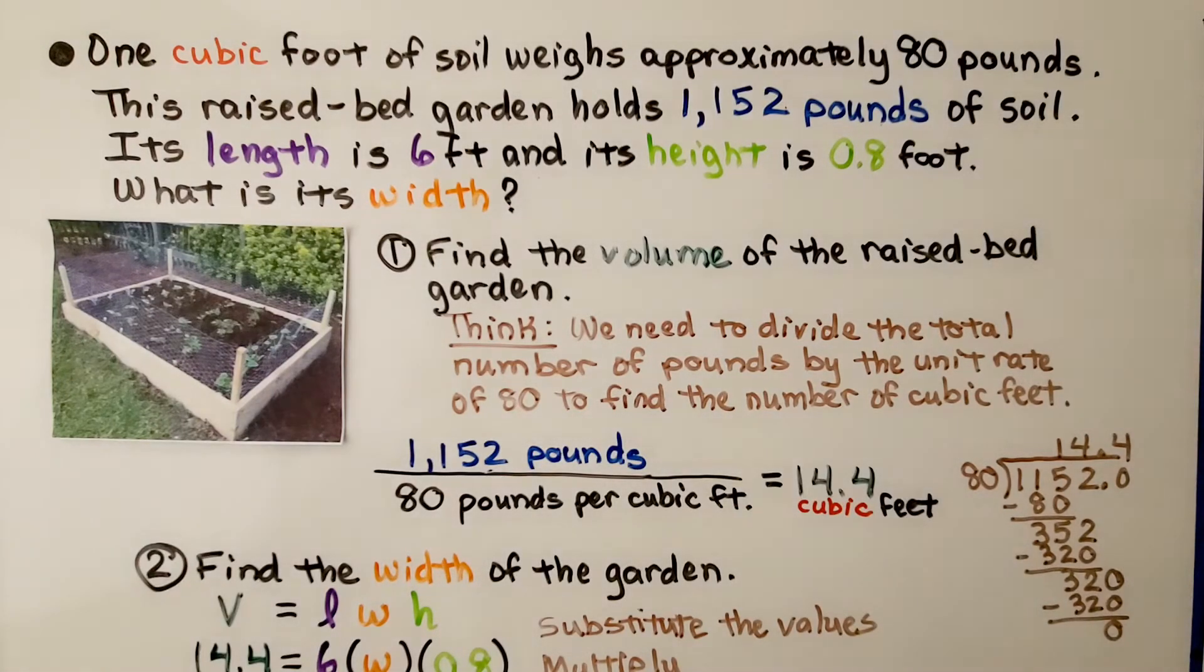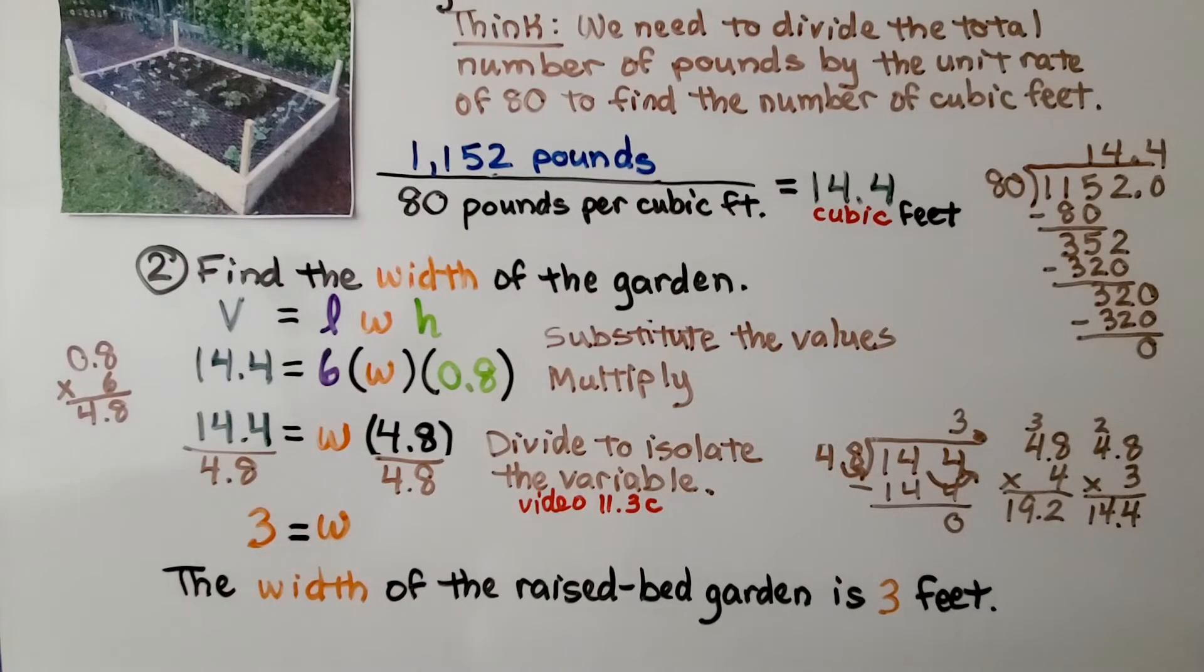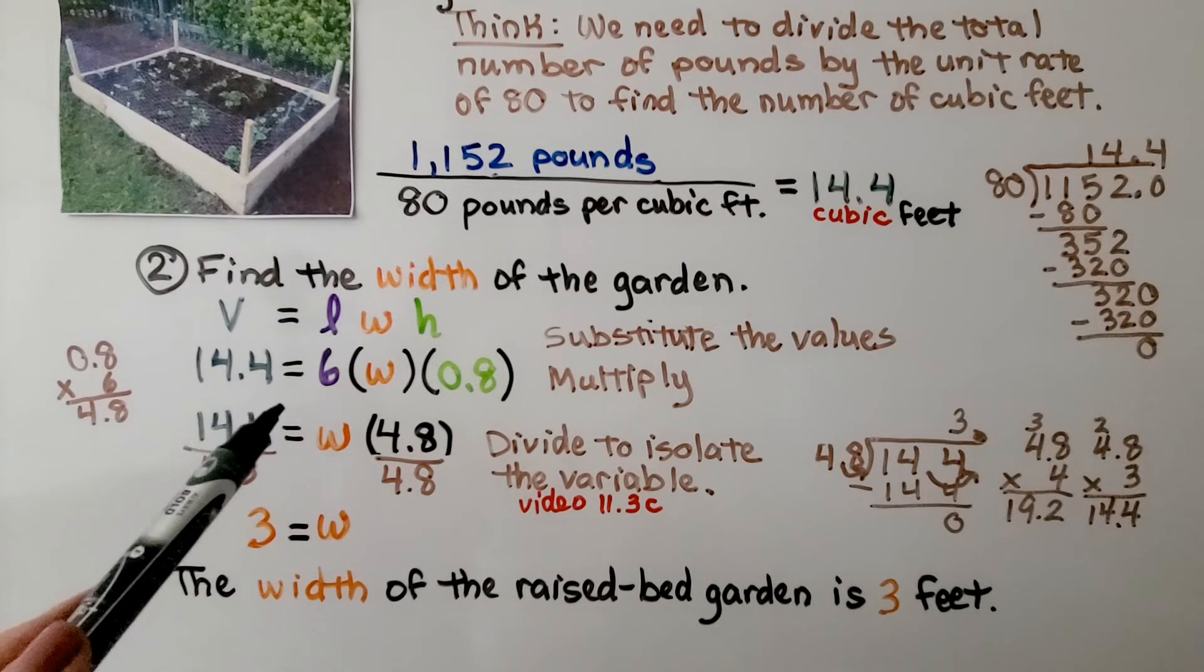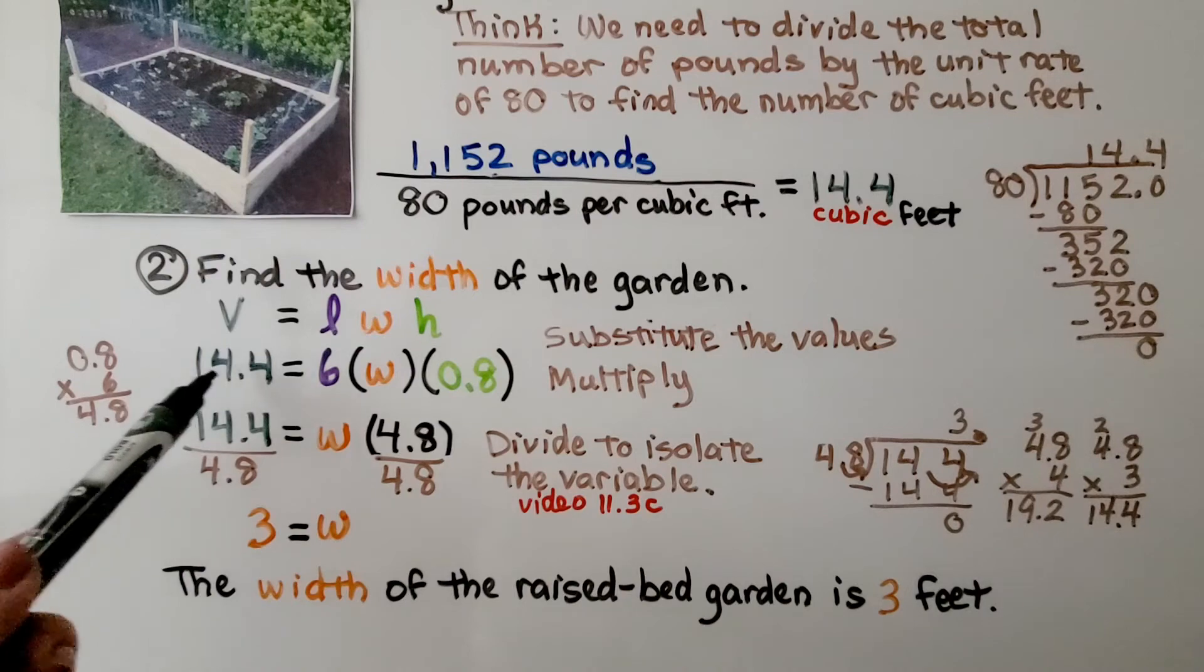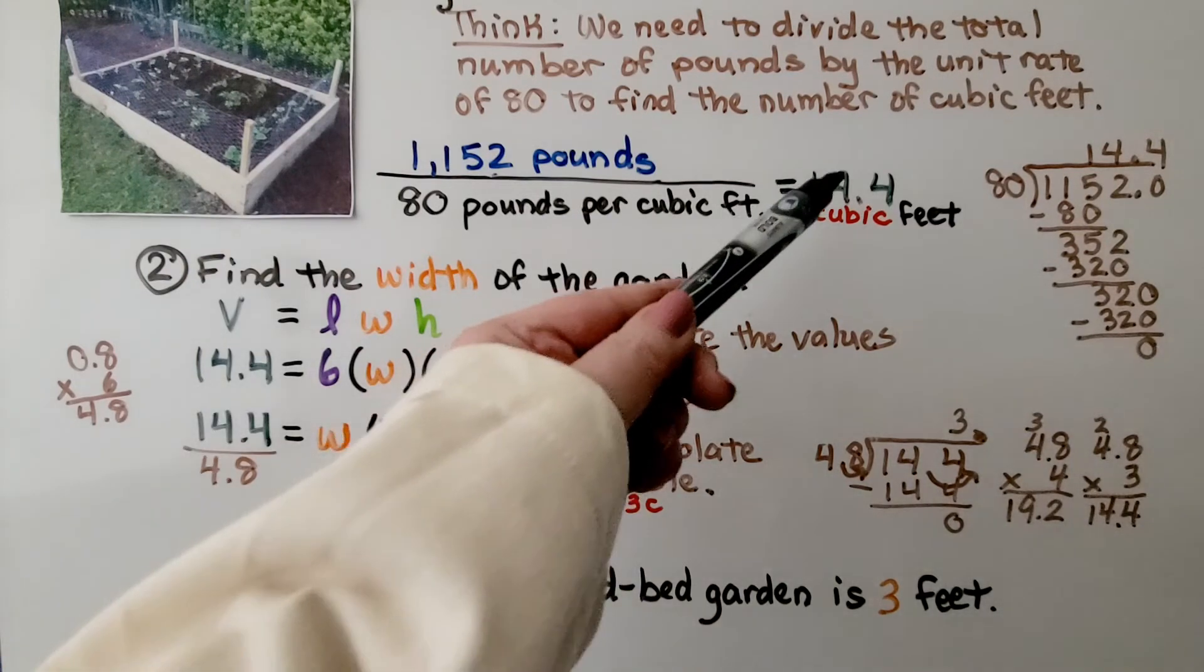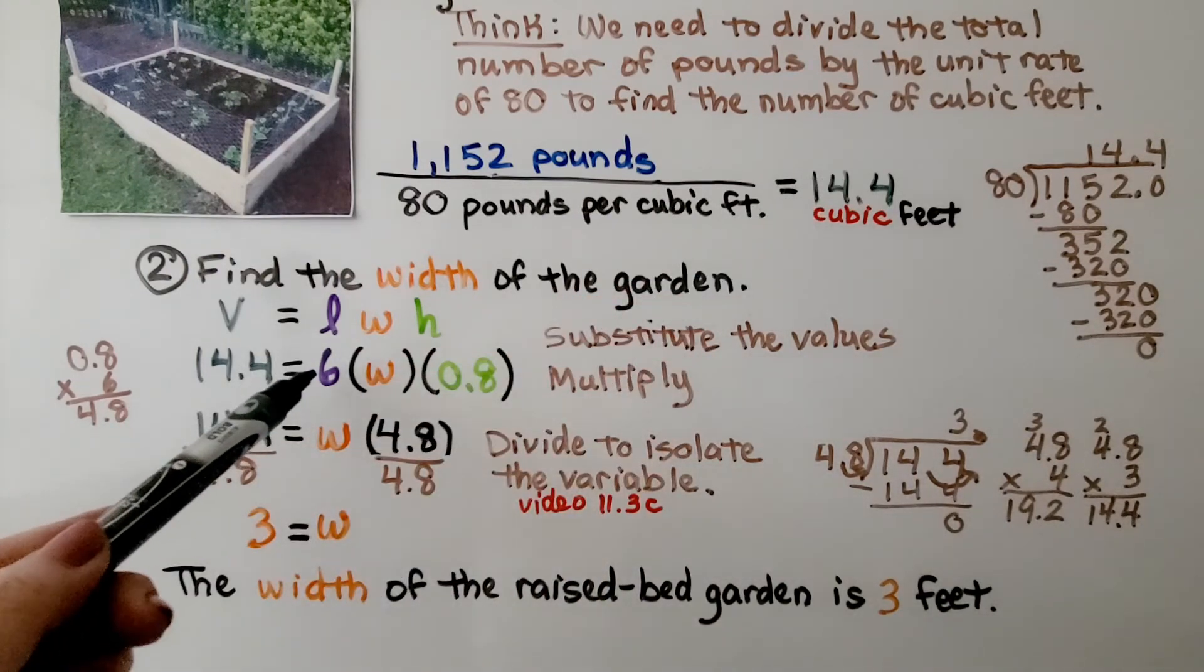Now, we find the width of the garden. And we use volume is equal to length times width times height. Now we substitute the values into the formula. We know the volume is 14.4 cubic feet. And we know the length was 6.